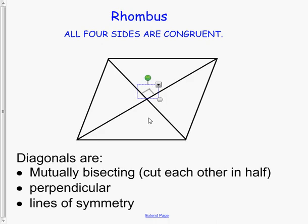And they're also lines of symmetry. So if you notice here, the diagonals, if we look at this diagonal here, that cuts this rhombus exactly in half. If we fold this over, it'll match up perfectly.